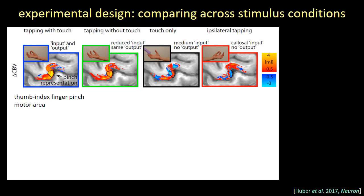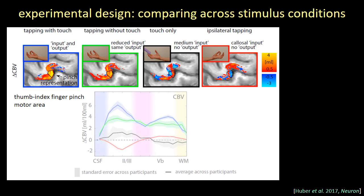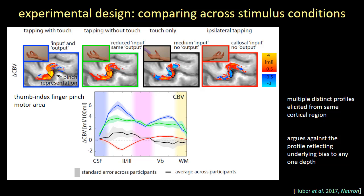One way to avoid these biases is through experimental design. A nice example is work by Renzo Huber looking at laminar analysis in motor cortex using CBV, comparing finger tapping with touch, finger tapping without touch, touch only, and ipsilateral tapping. Each condition elicited very different laminar profiles from the same cortical region, which argues against the profile reflecting any underlying bias toward any one depth.